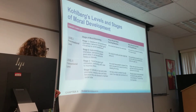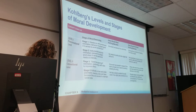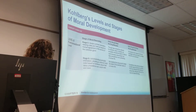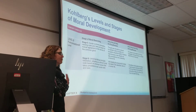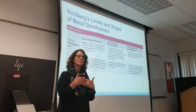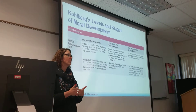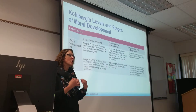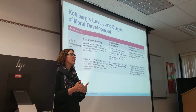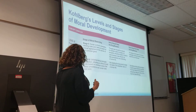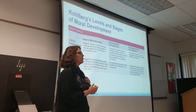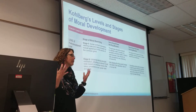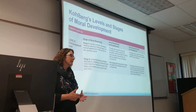At level three — the post-conventional level — you've moved beyond the rules in the sense that you've developed a moral code by which you want to live. You've developed your own internalized principles, and you may need to break the rules to follow them. So you may break rules or laws to do what you believe is right.